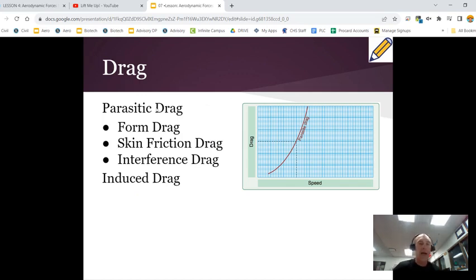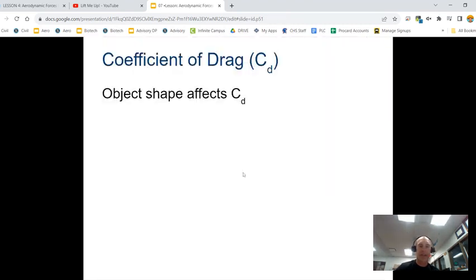Now, if we take a look at drag, we can look at drag as some different types here. We have parasitic drag. Parasitic drag is form drag, skin friction drag, and interference drag. We'll talk about those. And then you also have this thing called induced drag, which happens by actually flying. So we're going to get into these in a little bit.